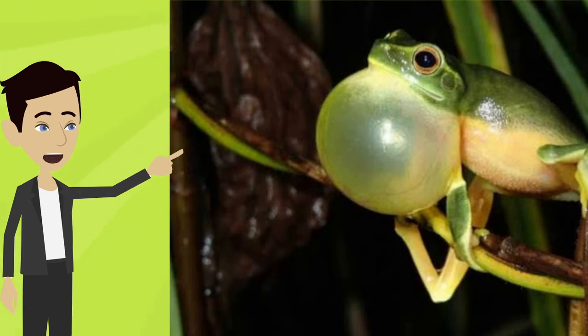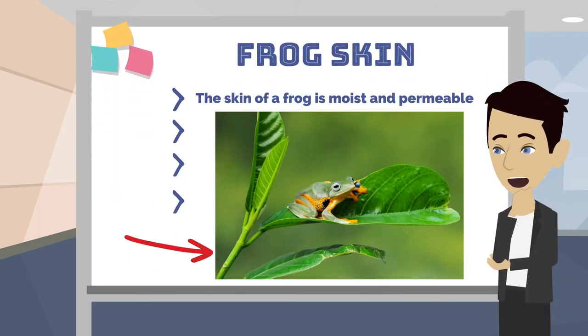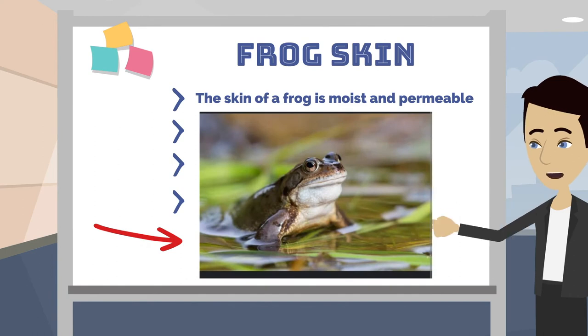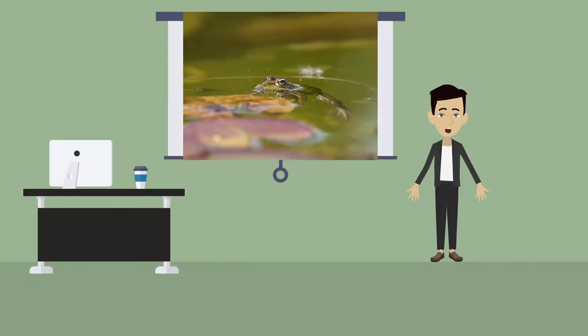This is known as cutaneous respiration. The skin of a frog is moist and permeable, which means that oxygen can pass through it and into the frog's bloodstream. This is especially useful for frogs that live in water, as they are able to breathe through their skin while they are submerged. This adaptation allows them to stay underwater for longer periods of time without having to come up for air.